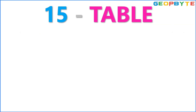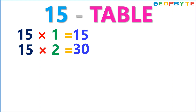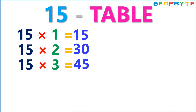Now, let us see the 15 table. 15 ones are 15. 15 twos are 30. 15 threes are 45.